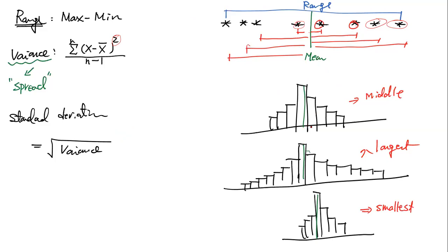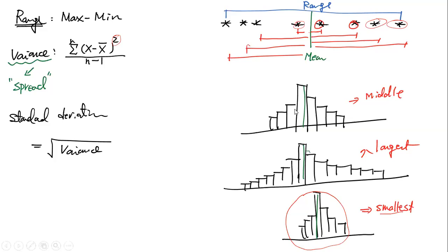Looking at three distribution types: a tight, clustered distribution will have the smallest variation. A widely spread distribution will have the largest variation because the distances to the mean are greater. A middle distribution will have variance in between the largest and smallest. If you want more detail, go back to video number one where we covered this in lectures.